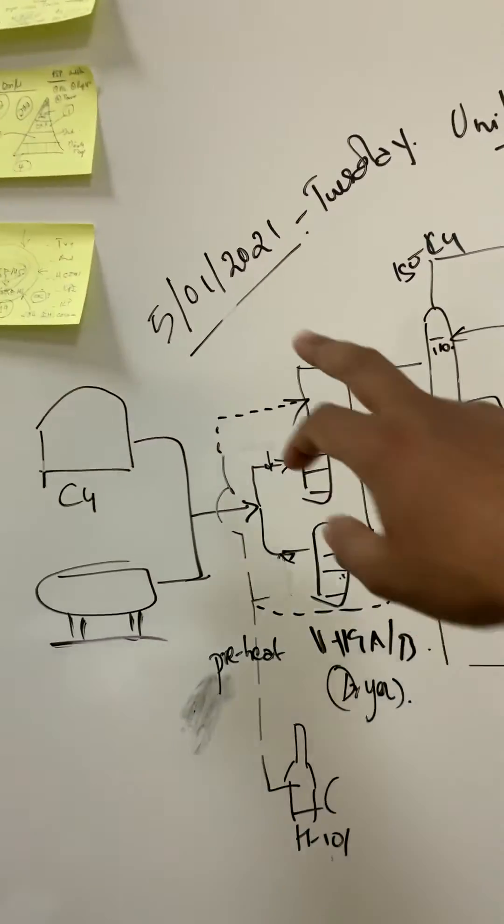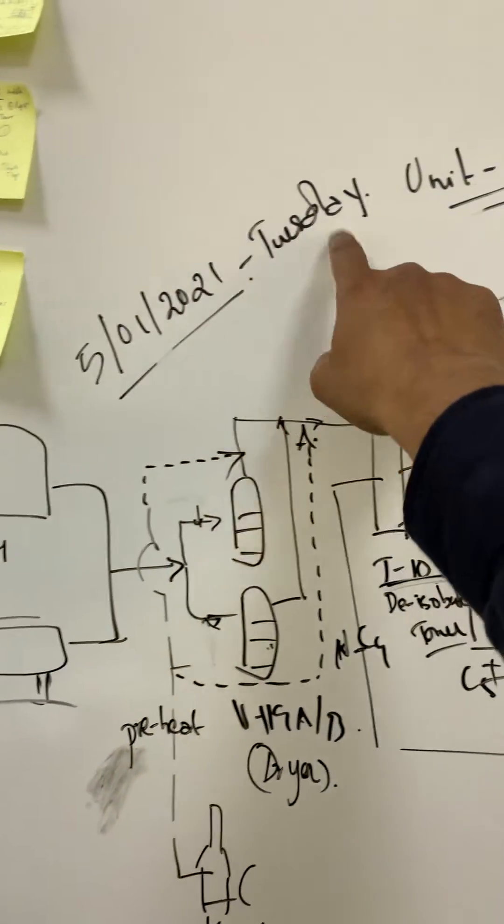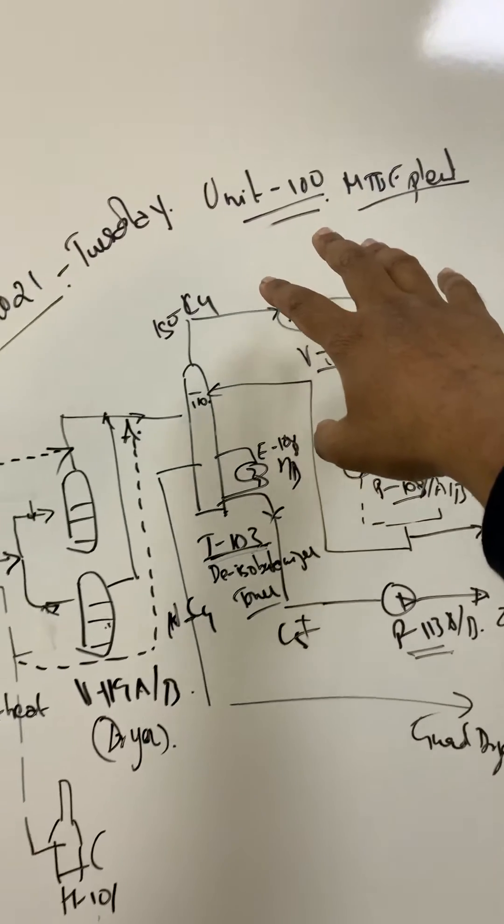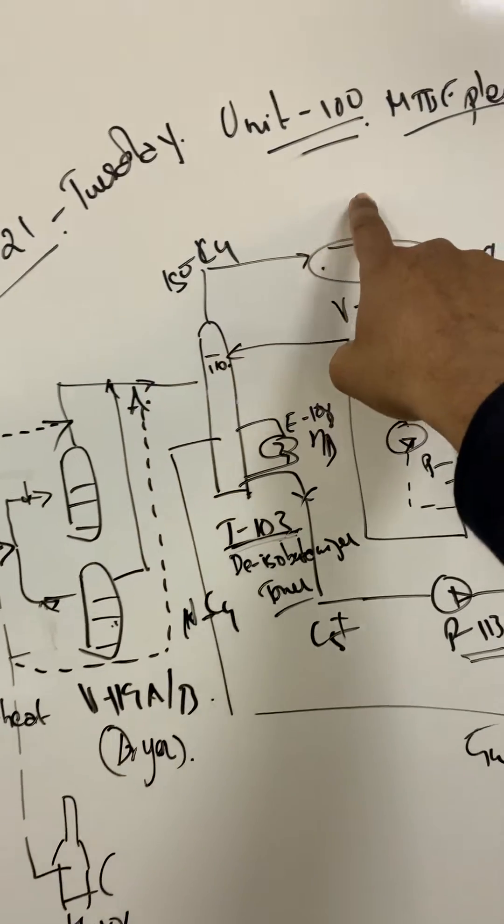Okay, so today, 5th of January 2021, Tuesday, we will look into a little bit of unit 100 of the MTB plant, just a small portion.